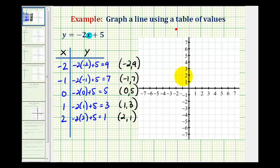And then for the point negative one, seven, we'll move left one unit and up seven units. Point zero, five would be on the y-axis here. It's also the y-intercept of our line.